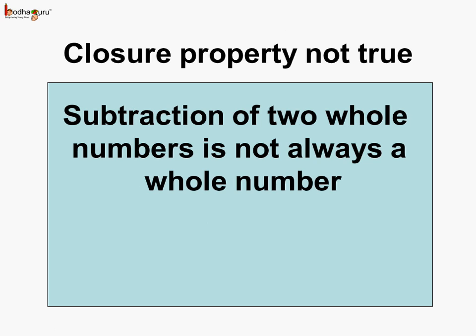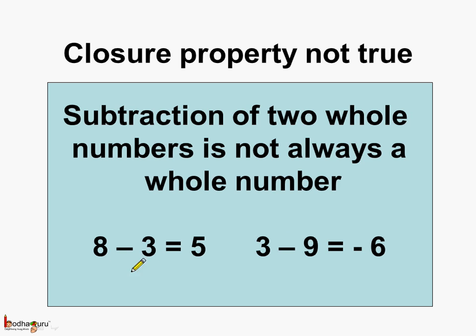Now let us revise what we learnt today. First, the closure property is not true for the subtraction of two whole numbers, which means subtraction of two whole numbers is not always a whole number. As we saw, 8 minus 3 is equal to 5, but 3 minus 9 is equal to minus 6. Here 5 is a whole number, but minus 6 is not a whole number.